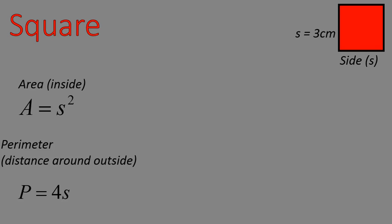So our first figure is a square. The two main formulas that you'll get with a square are the area and perimeter. The area of a square is the side squared, A = s², and the perimeter is four times the side length, P = 4s.